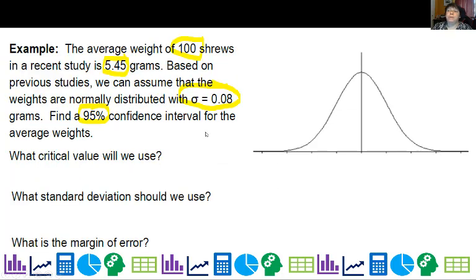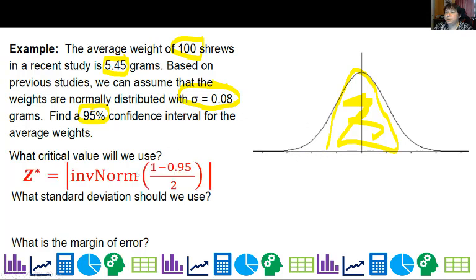So let's look at this example of shrews. And we're going to say the average weight of 100 shrews in a recent study is 5.45 grams. Based on previous studies, we can assume that the weights are normally distributed with this standard deviation. And I want to find a 95% confidence interval. So what critical value should I use? Well, I want the middle to be 95% and that leaves 5% left over. So 2.5% for here. And so 1-0.95 is 5% divided by 2 is 2.5%. And I get that 1.96.